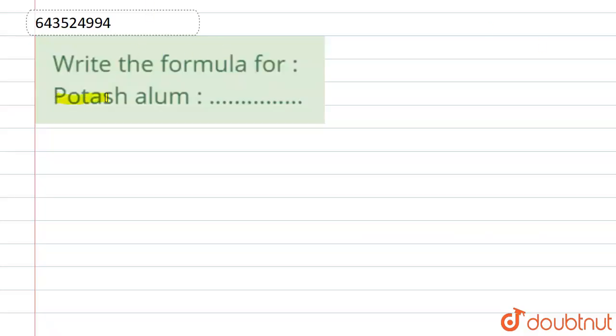Right, so the formula for potash alum is actually K2SO4·Al2(SO4)3·24H2O.